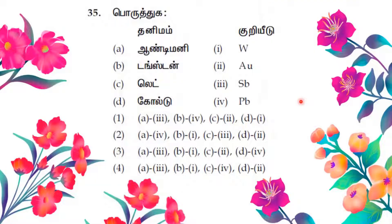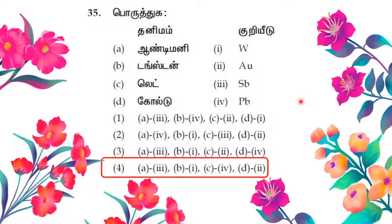Question number 35: Antimony is W, Tungsten is AU, Lead is SB, Gold is PB — those are incorrect options. Answer option 4: Antimony is SB, Tungsten is W, Lead is PB, Gold is AU.